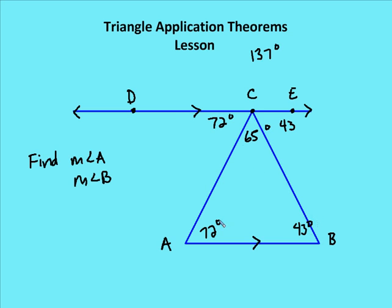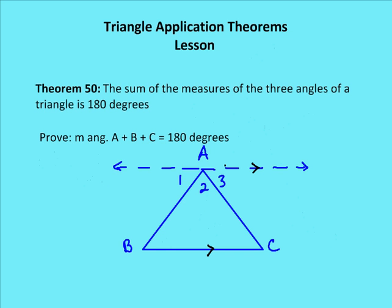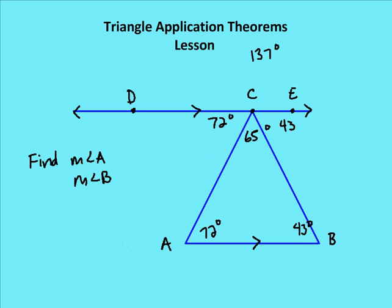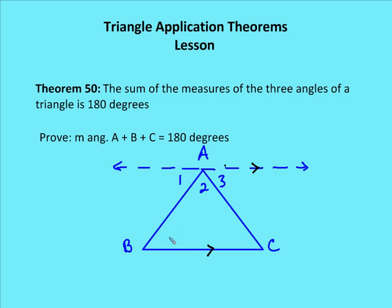As it turns out, if I add these three angles — A, B, and ACB — they're the same as the measure of a straight angle DCE. This leads us to the proof for Theorem 50, which says the sum of the measures of the three angles of a triangle is 180 degrees. By defining these angles as one, two, and three, I know that angle B is equal to angle one and angle C is equal to angle three. So if angle one plus two plus three measures 180 degrees as a straight line, then the measure of the triangle will also equal 180 degrees.